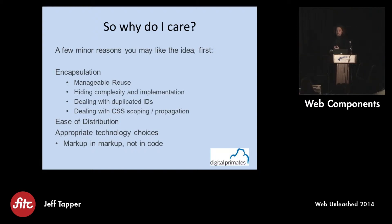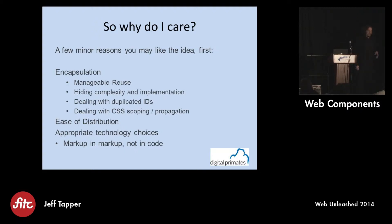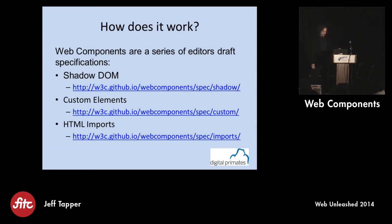The other nice thing about Web Components and Polymer is we have nice ease of distribution, and we get to make appropriate technology choices. We get to make components that we can very easily reuse as tags, rather than having to have 50 lines of JavaScript to instantiate a new data grid or whatever it is we're creating. Does that make sense?